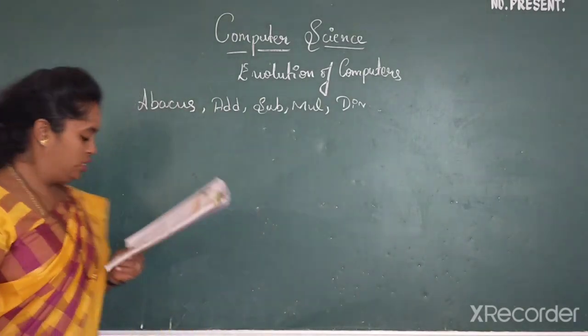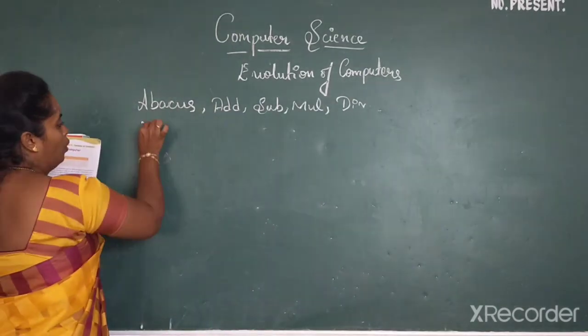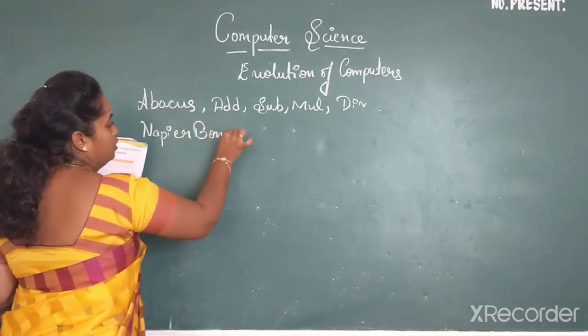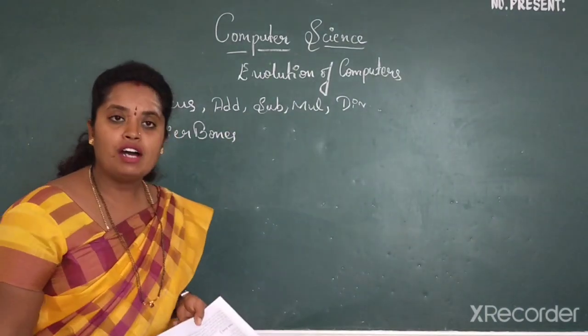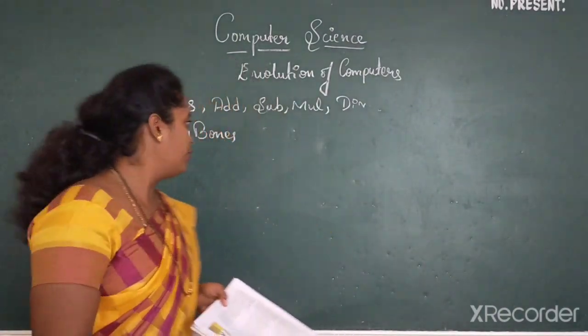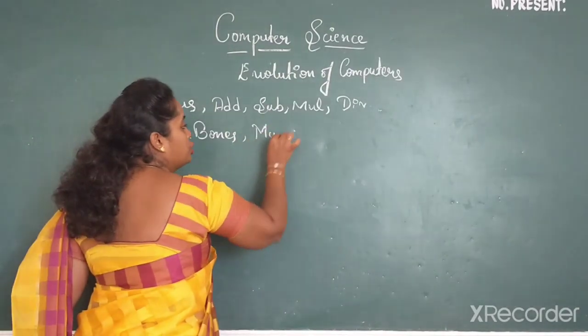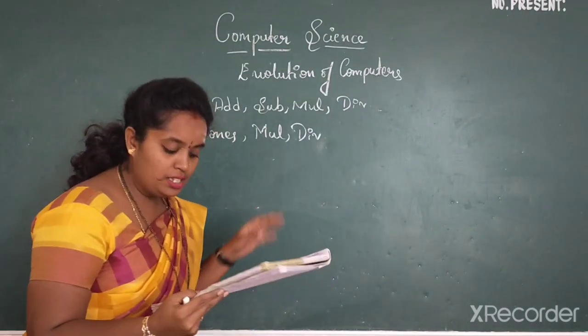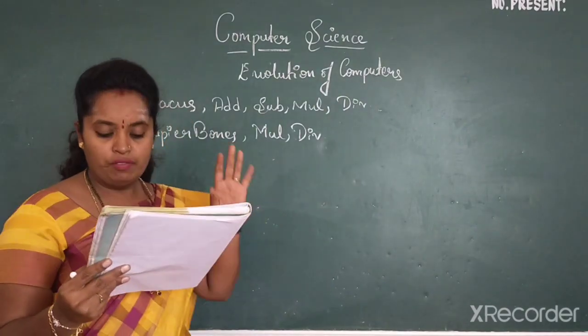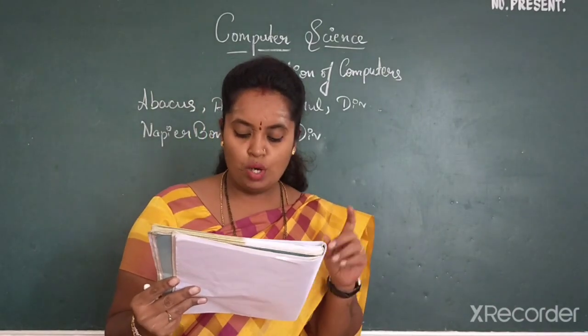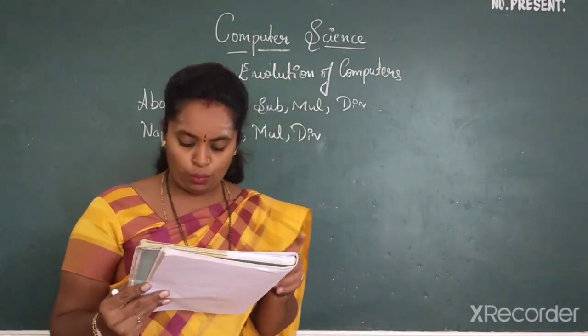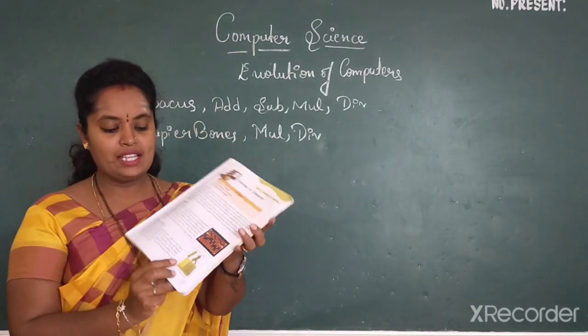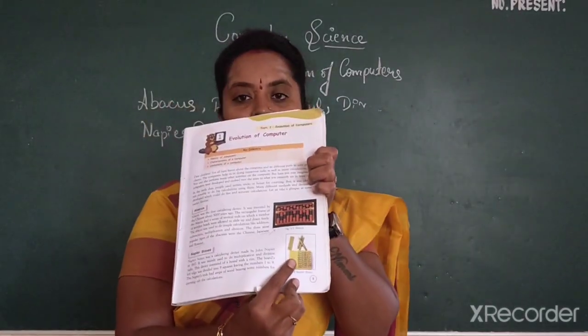Then moving on to Napier bones. What is this Napier bone? So this calculating device was basically made to do the multiplication and division. This consisted of a board with a ring. The board's left edge was divided into 9 squares having the numbers 1 to 9, and I think you all can see the picture available here.